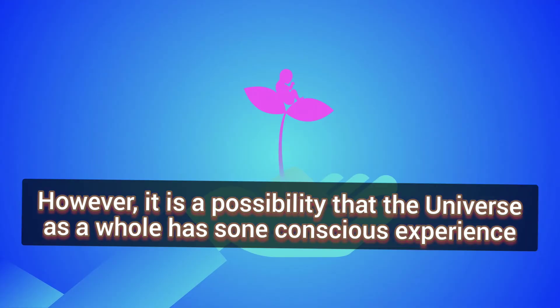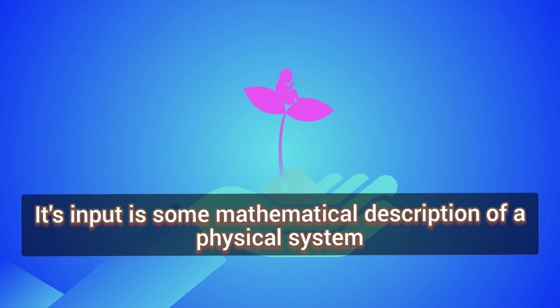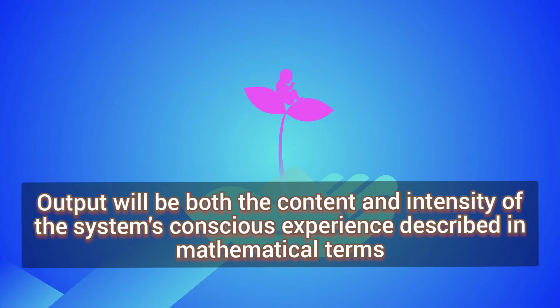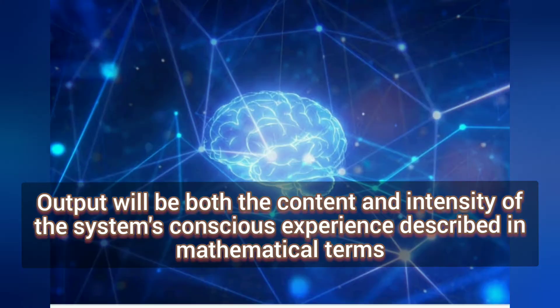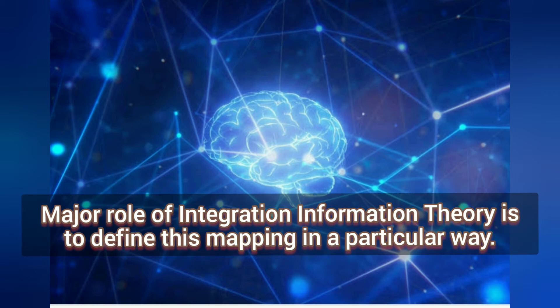It is a possibility that the universe as a whole has some conscious experience. Integrated information theory is a mathematical model of consciousness. Its input is some mathematical description of a physical system. Output will be both the content and intensity of the system's conscious experience described in mathematical terms. In mathematical terminology, this is called a mapping from physical systems to spaces of conscious experience. Major role of integrated information theory is to define this mapping in a particular way.